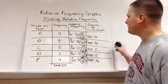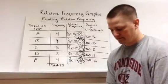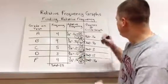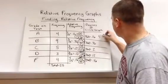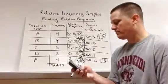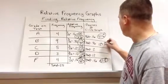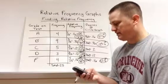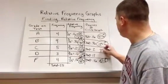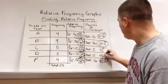Now we have our percents. The only thing left for the pie chart is to take these decimals, multiply them by 360, and we'll have the degrees to measure. 360 times 0.16 gives us 57.6 degrees. 360 times 0.36 gives us 129.6 degrees. 360 times 0.2 gives us 72 degrees. And 360 times 0.12 gives us 43.2 degrees.